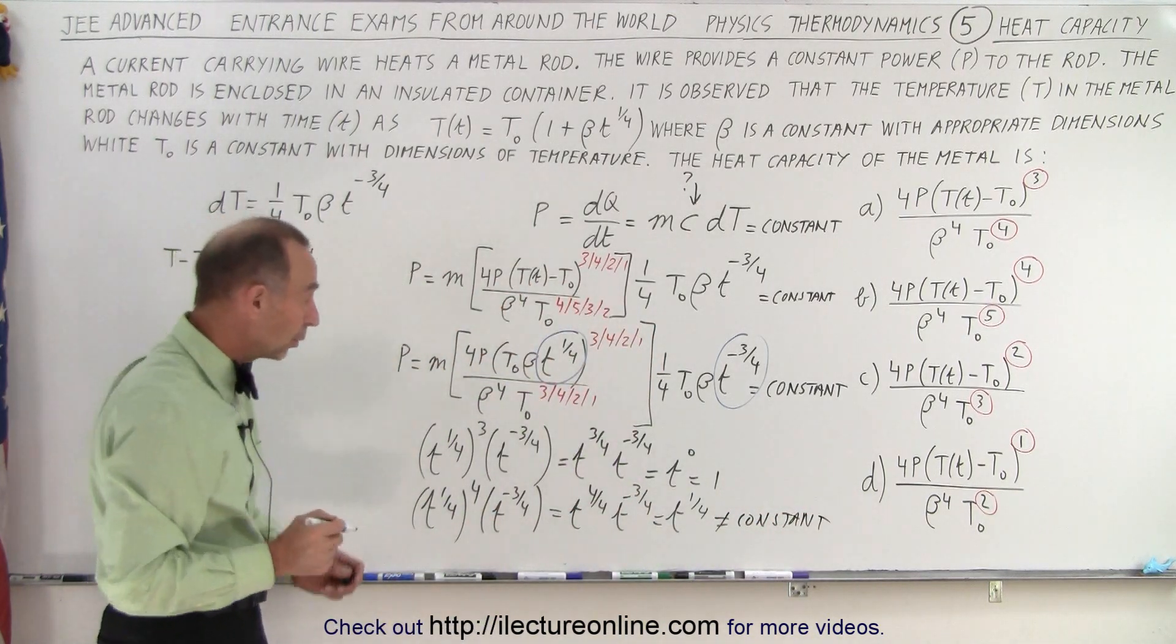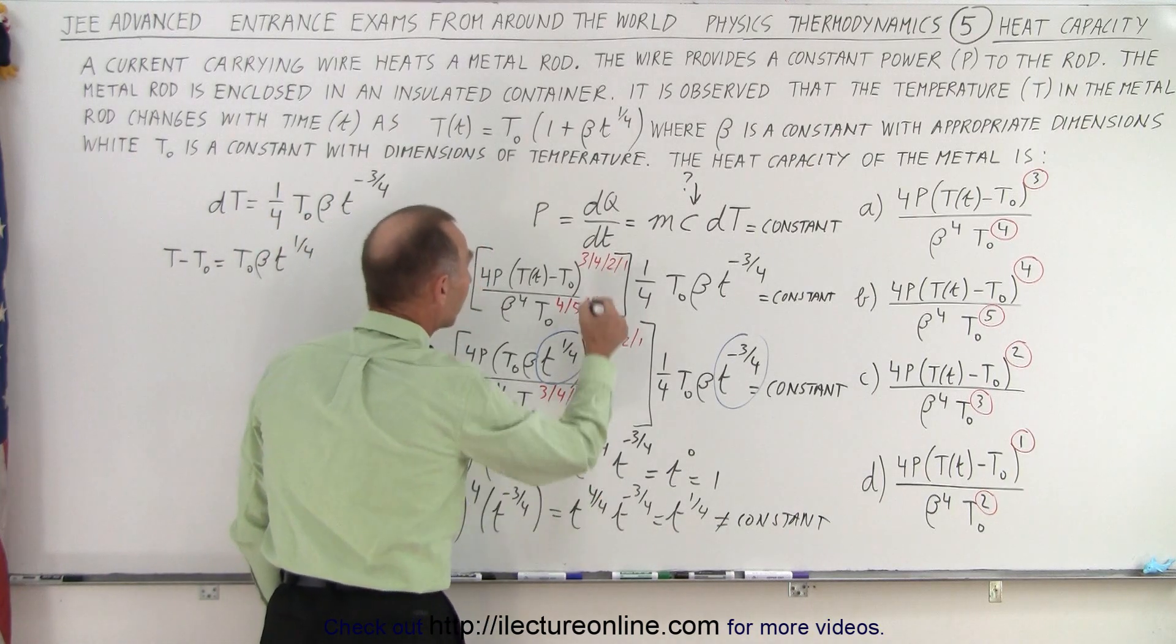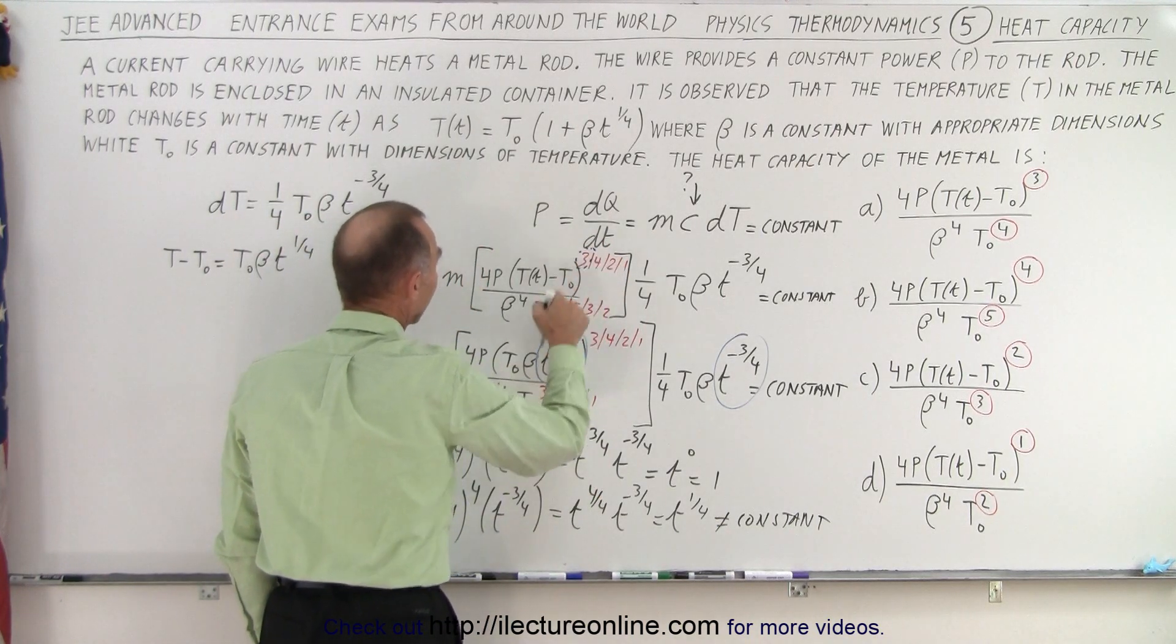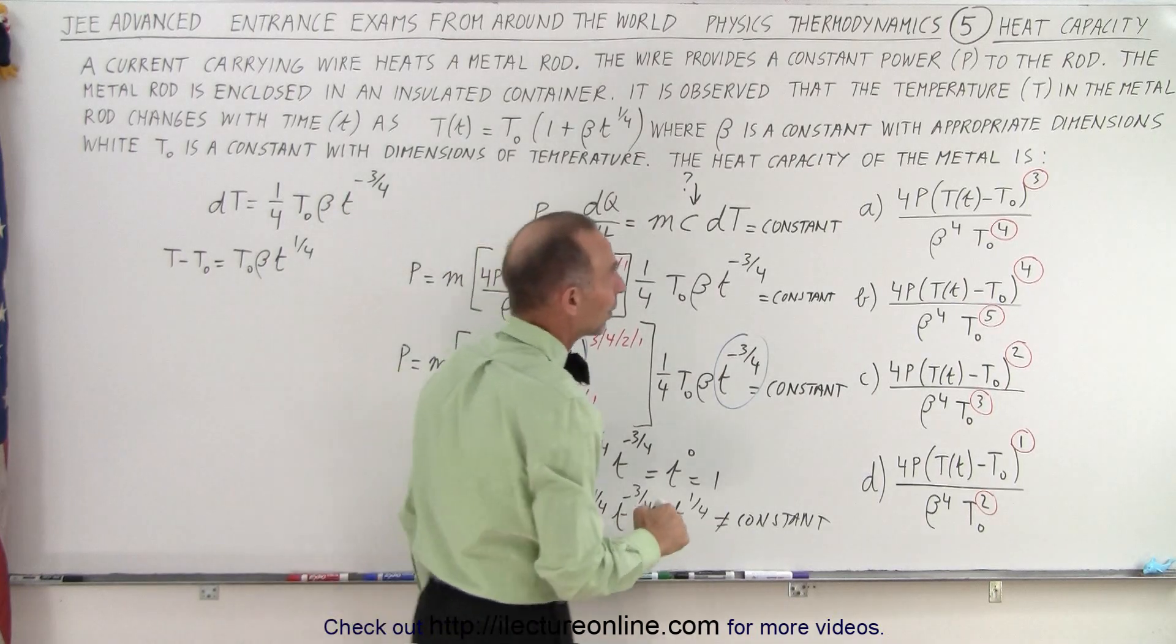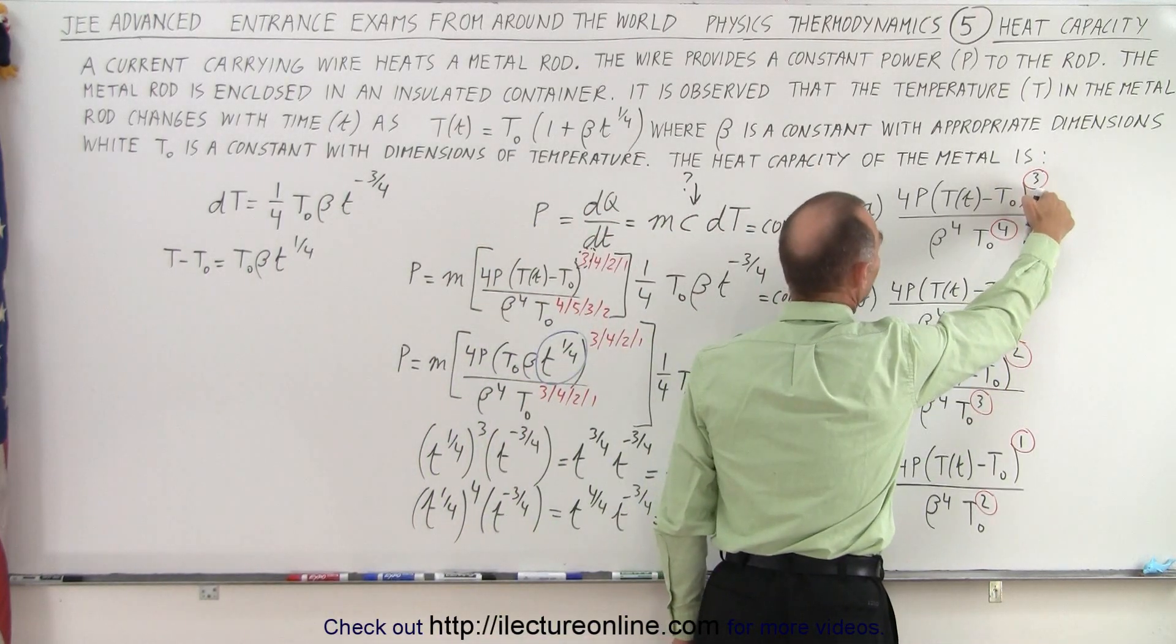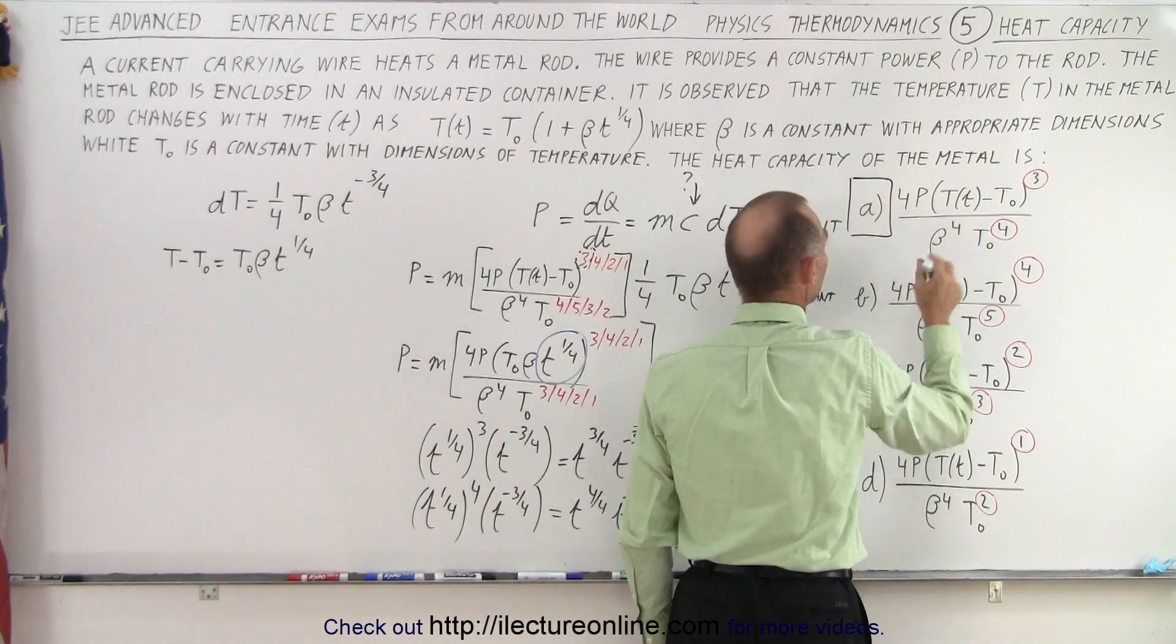So it looks like the only answer is the first one that I picked when I picked the exponent 3. Again, 4 doesn't make any difference, so when I go over here, that's where I find the exponent 3, so A must therefore be the answer.